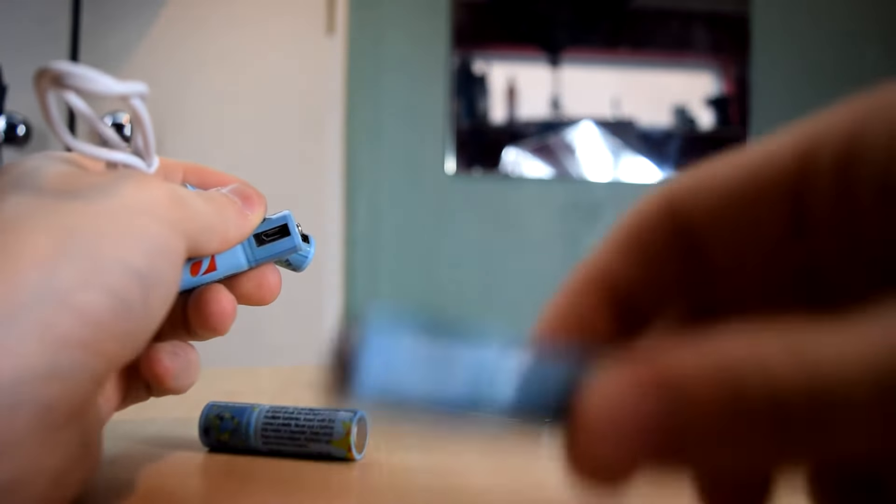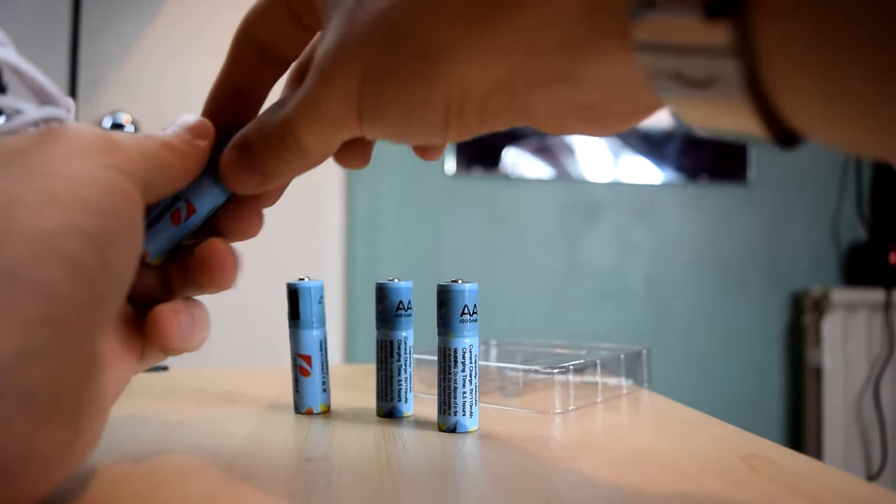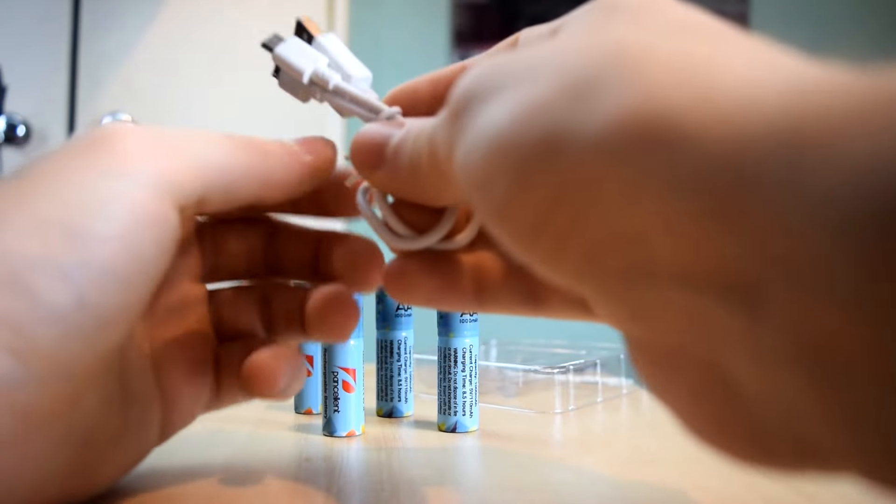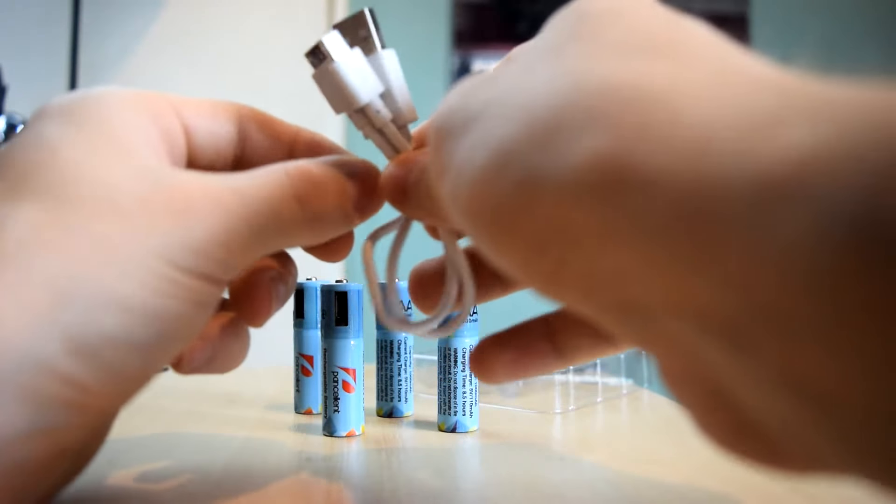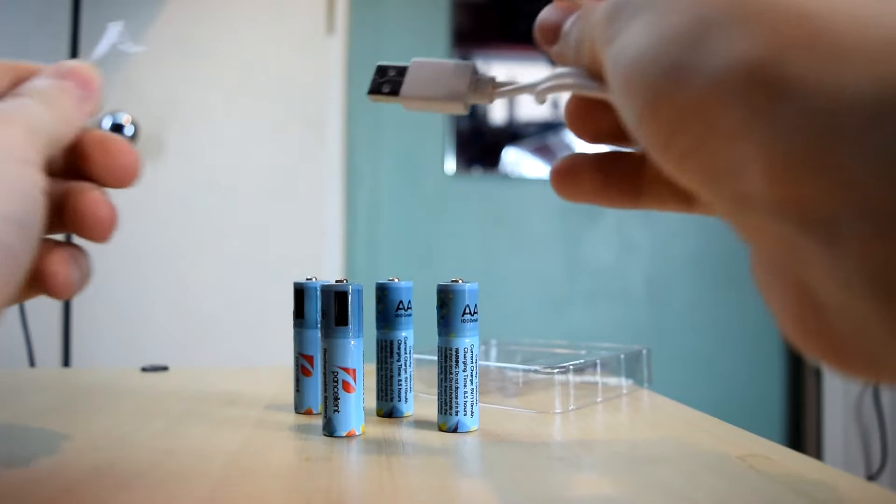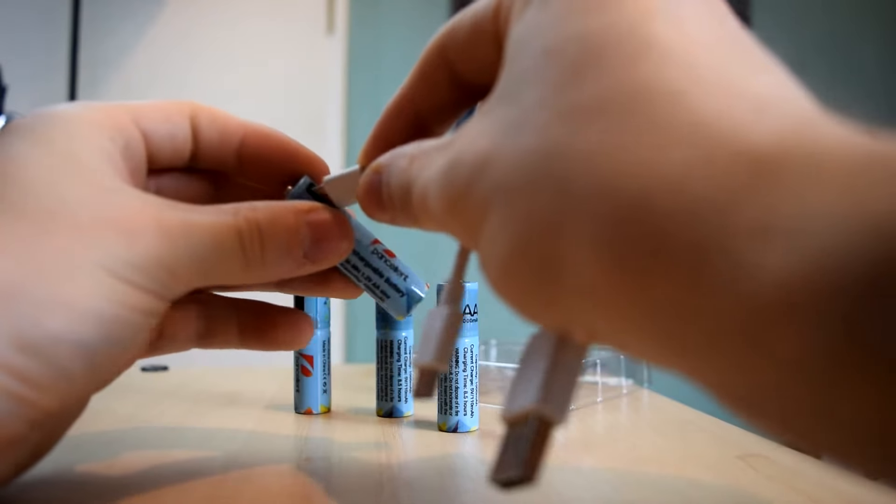This will basically mean that you'll never need one of those annoying chargers again from Duracell or Energizer or any of those wall plug ones. You can now just have a micro USB one, and possibly in the future we'll have batteries with things like Lightning ports in them, and possibly even USB-C and stuff like that.